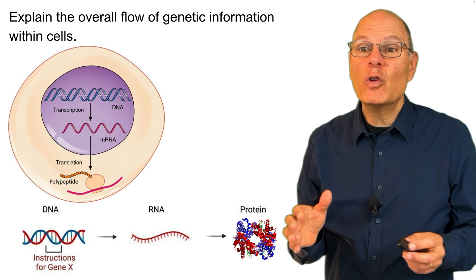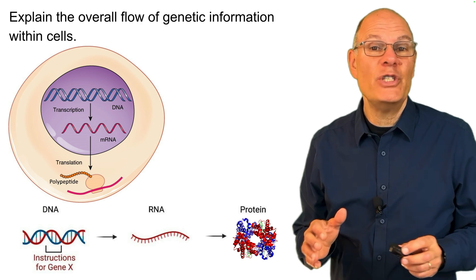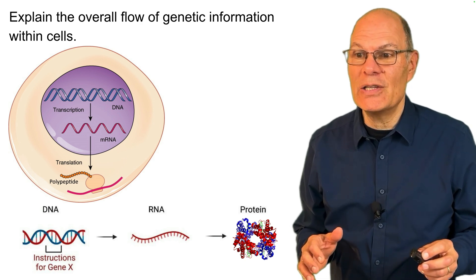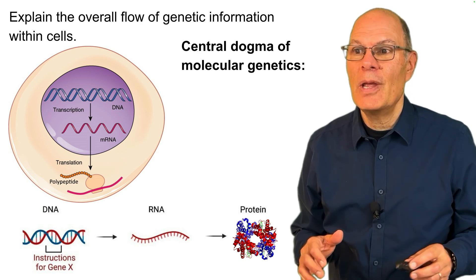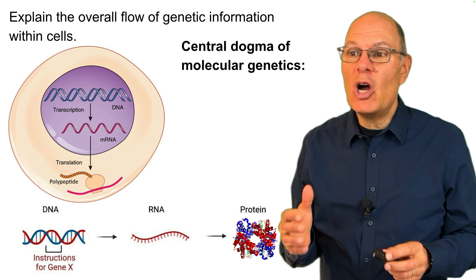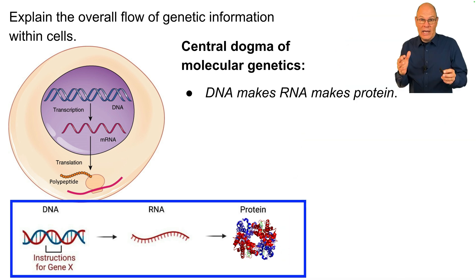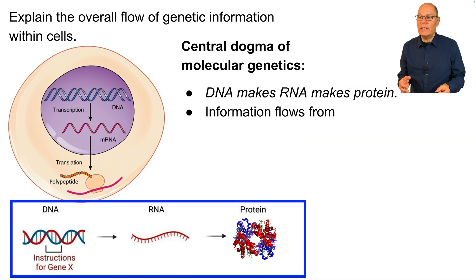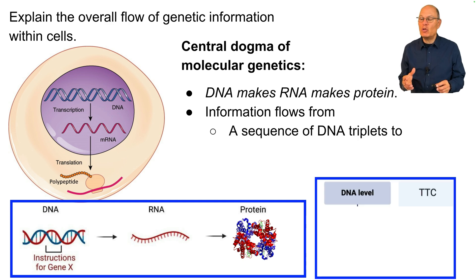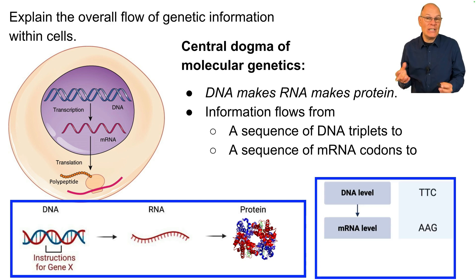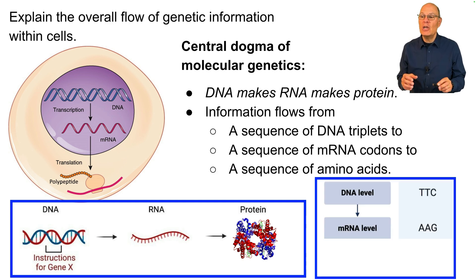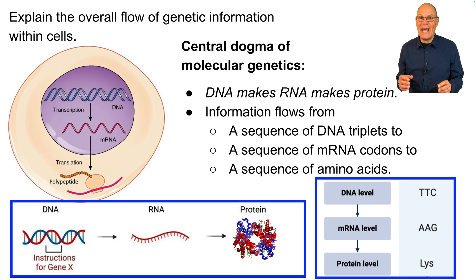Explain the overall flow of genetic information within cells. This is the central dogma of molecular genetics, which is DNA makes RNA makes protein. Information flows from a sequence of DNA triplets to a sequence of mRNA codons to a sequence of amino acids.